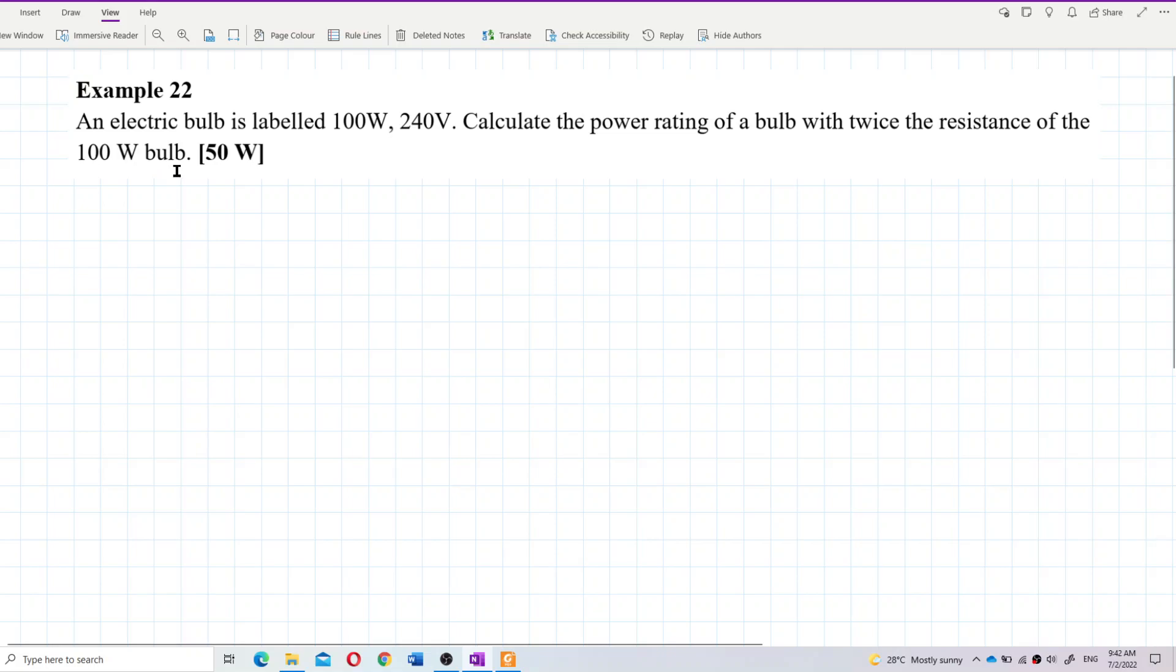So here we have 2 bulbs. We have bulb 1 and bulb 2. It's better we put the information in 2 columns. Alright, let's gather the information.